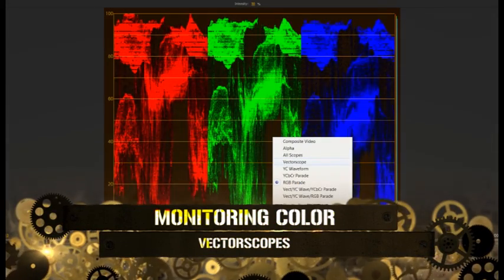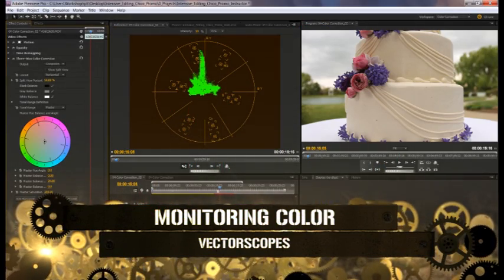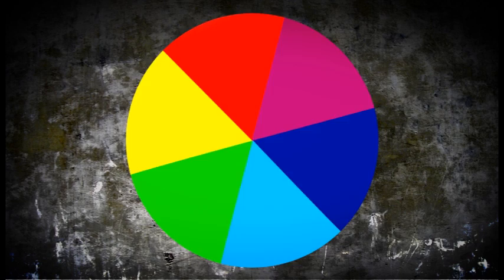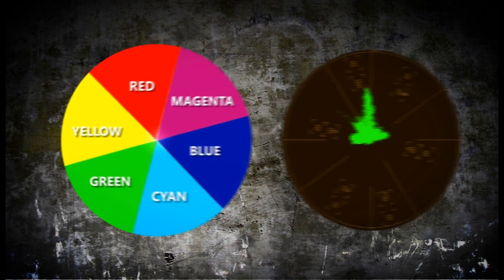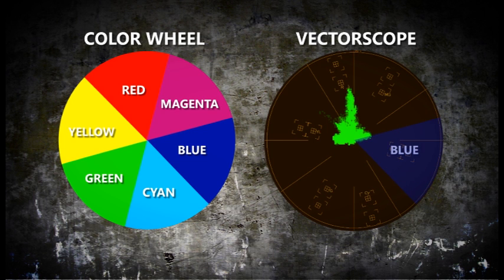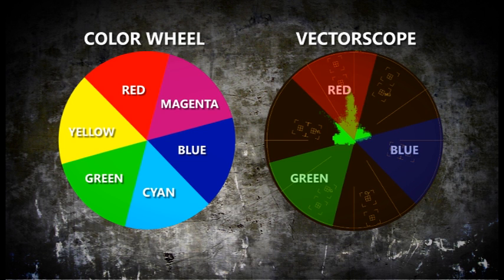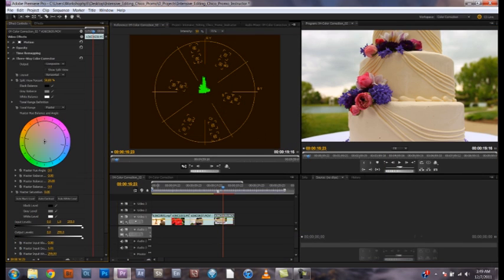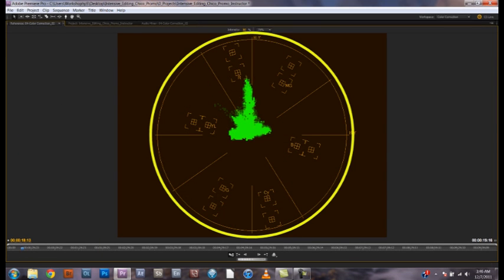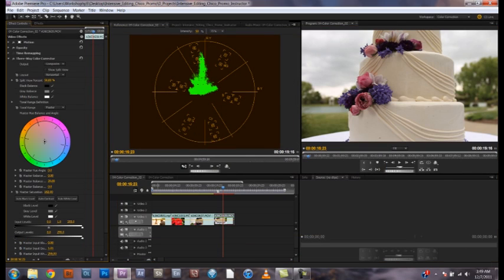The last helpful monitor is the vectorscope. The vectorscope shows the color or chroma values of your image. Of all the monitors, this one can be the most confusing for first-time editors, so we'll break down what each part represents. It's helpful to look at a color wheel — just as a color wheel shows the primary colors of red, green, and blue, as well as the secondary colors of cyan, magenta, and yellow, the vectorscope shows these colors as well. The center of a vectorscope represents completely unsaturated, or black and white, footage, while the outermost ring represents 100% color saturation.